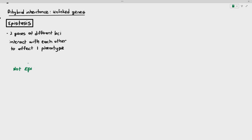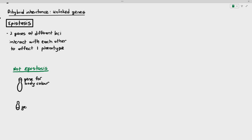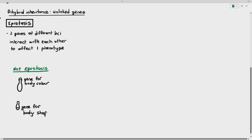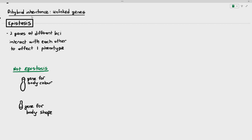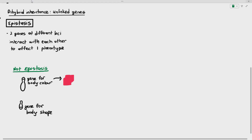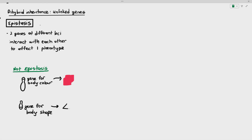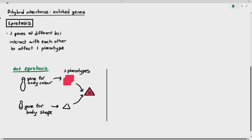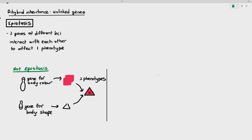In the previous video about dihybrid inheritance, I gave the example of a gene for body color and a gene for body shape. The gene for body color will affect the color of the organism, and the gene for body shape will affect the shape of the organism, making it a red triangle. So here you have two phenotypes — one phenotype is color, one phenotype is shape. This is not epistasis, because in this case two genes affect two phenotypes.